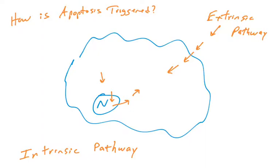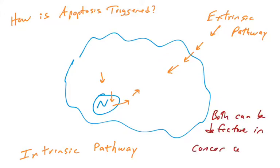The extrinsic pathway could involve the immune system recognizing a cell as virally infected or precancerous and telling it to undergo cell death. For cancer cells, they are typically defective in both of these pathways. Cancer cells should be recognized by the immune system and deleted, but they have evolved mechanisms to resist the extrinsic pathway. Similarly, the stress of going through the cell cycle means cells are unable to sense stress or trigger the biochemical machinery of apoptosis. So cancer cells are resistant to apoptosis.